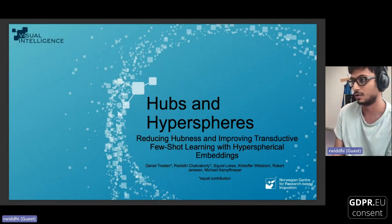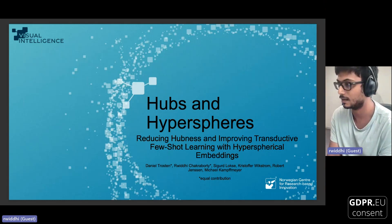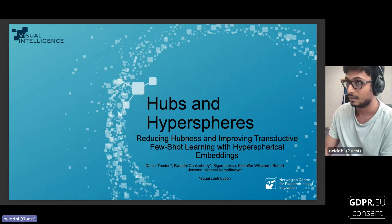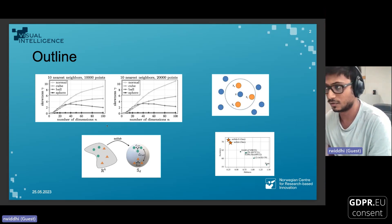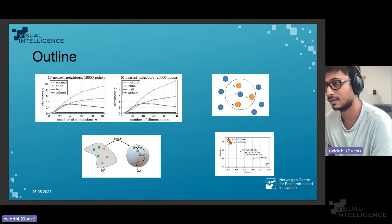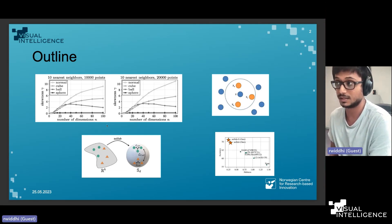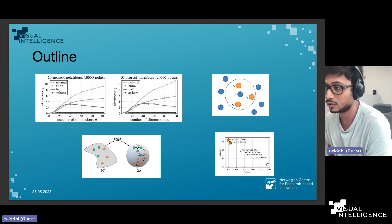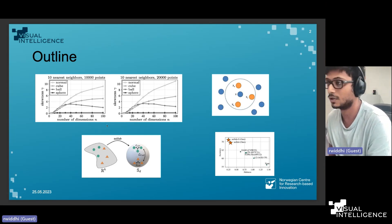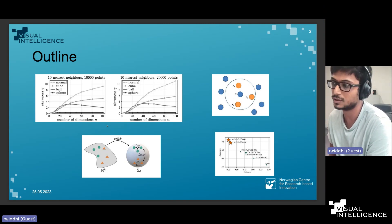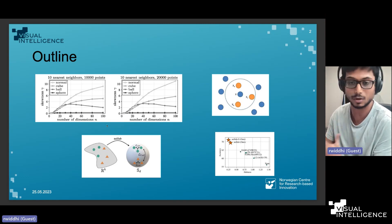This is one of the projects we worked on recently — it was accepted to CVPR this year. It's called 'Hubs and Hyperspheres.' There are four major components that tie this work together: few-shot learning, the hubness problem, our proposed methods to mitigate the problem, and results along with other interesting findings.